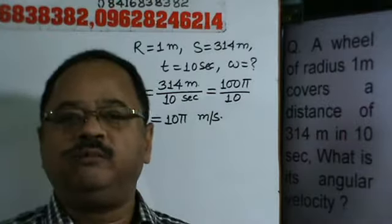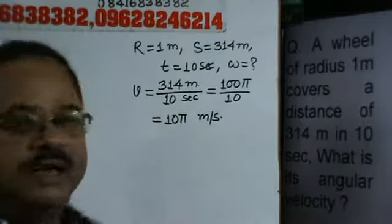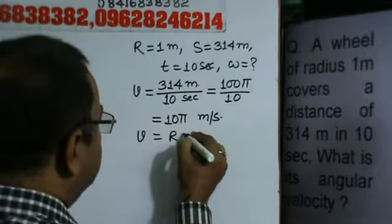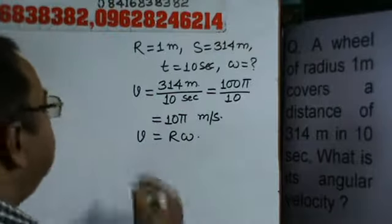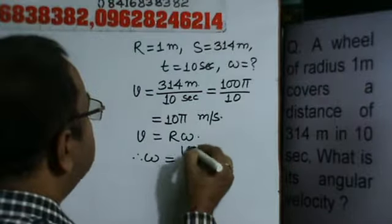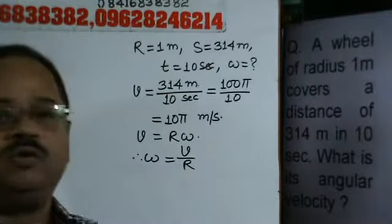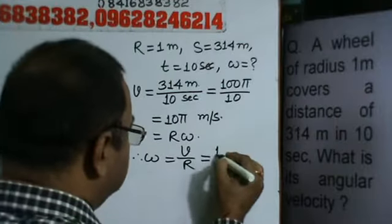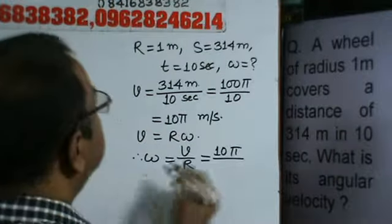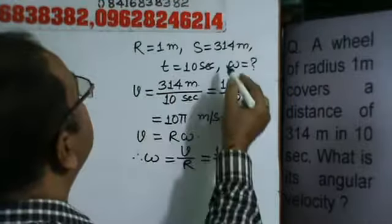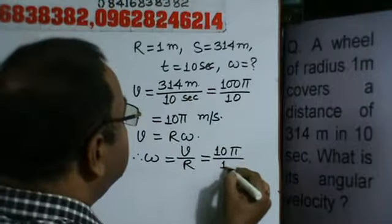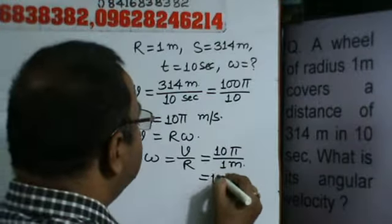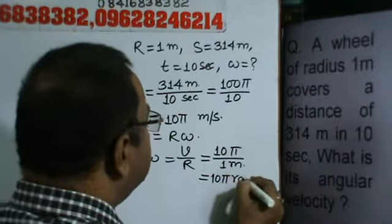So linear velocity of the body is equal to 10 pi meters per second. Now, for angular velocity, we know that V is equal to r omega. So omega will be equal to V divided by r. V is equal to 10 pi and r is equal to 1 meter. So omega will be equal to 10 pi radians per second.